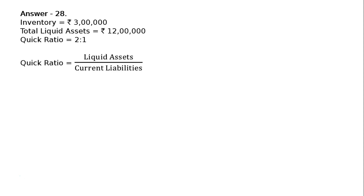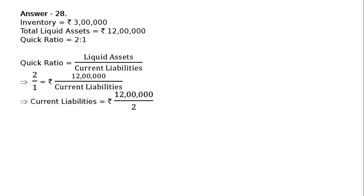Quick ratio is equal to liquid assets upon current liabilities. So 2 upon 1 is equal to Rs. 12 lakhs upon current liabilities, which implies that current liabilities is equal to Rs. 12 lakhs upon 2, that is Rs. 6 lakhs.